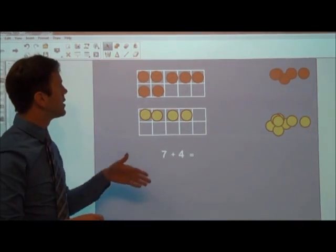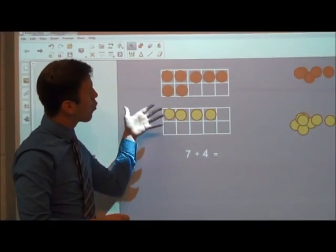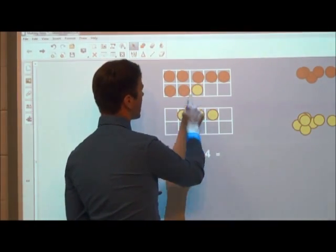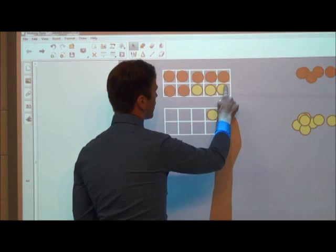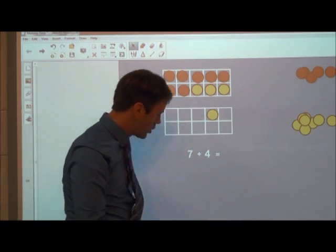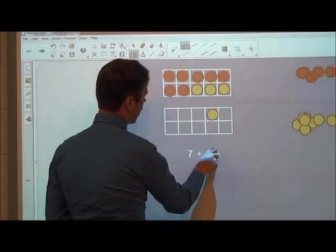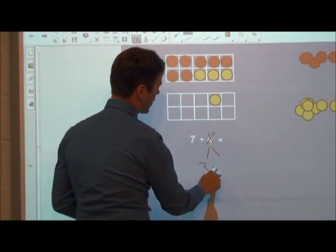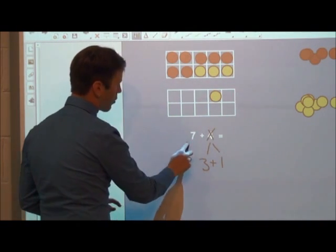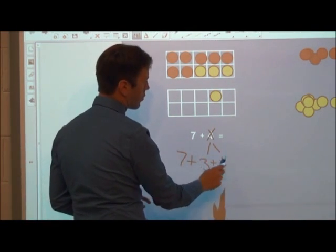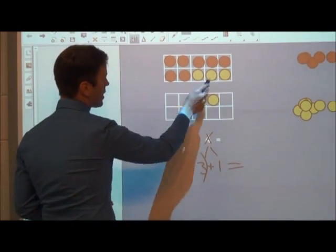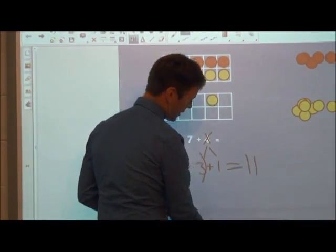So now we'd ask the students, what is 7 plus 4, and hopefully they should be able to move these up to make a 10 and say, well, they can see it's 10 plus 1. They can also see that 4 is really 3 plus 1. So now the problem is 7 plus 3 plus 1. 7 plus 3 is 10 plus the 1 gives us 11.